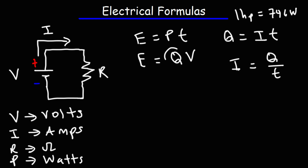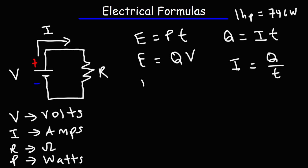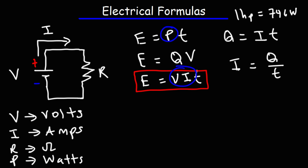If we replace Q with IT, we get that electrical energy is equal to voltage multiplied by the current multiplied by the time, which you can also derive by replacing power with voltage times current. So those are some common formulas you want to be familiar with when dealing with simple circuits — Ohm's law, power, and electrical energy.